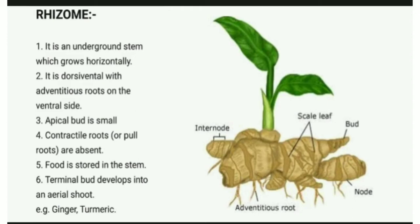Simply above the soil, the terminal bud grows. Examples of rhizome are ginger and turmeric. On the screen you can see the image of ginger (Zingiber). The underground stem bears the node, internode, scale leaf, bud, and adventitious roots.